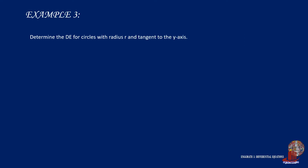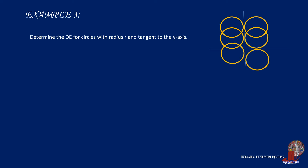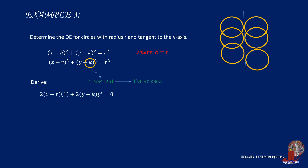Example number 3: Determine the differential equation for circles with radius r tangent to the y-axis. The radius r is a parameter. Since the circles are tangent to the y-axis, the centers are at distance r from the y-axis. Using the standard circle formula, we equate h to r, giving x minus r squared plus y minus k squared equals r squared. Since r is a parameter, there is only one constant, so we derive once, yielding x minus r plus y minus k times y-prime equals 0.